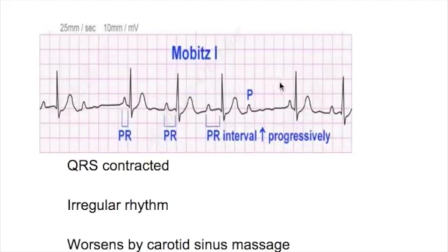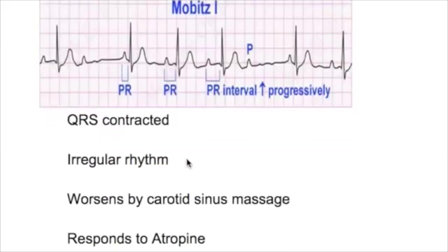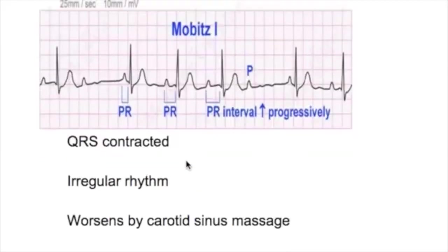Once the QRS is missing, the rate becomes irregular, compared to type one where the rate was regular and QRS was present. In Mobitz type one, the block is worsened by carotid sinus massage but responds to atropine.